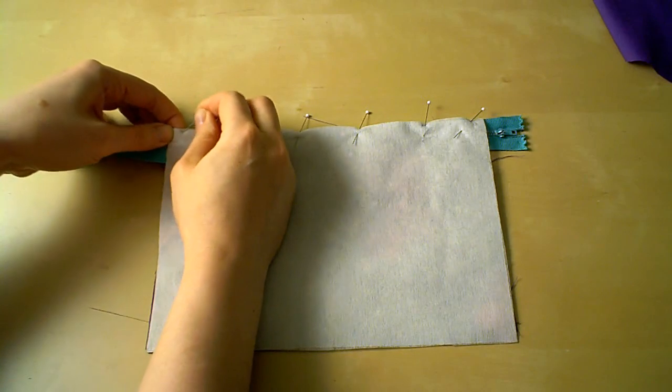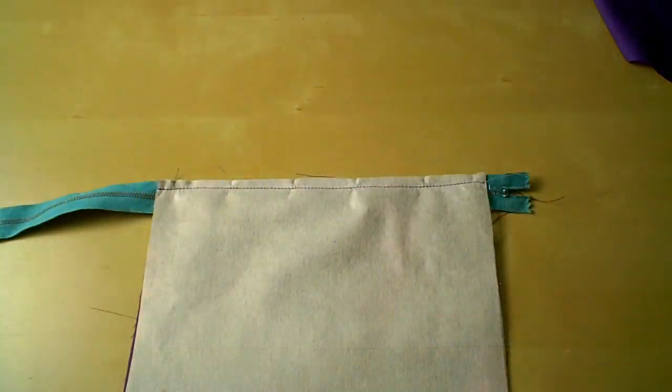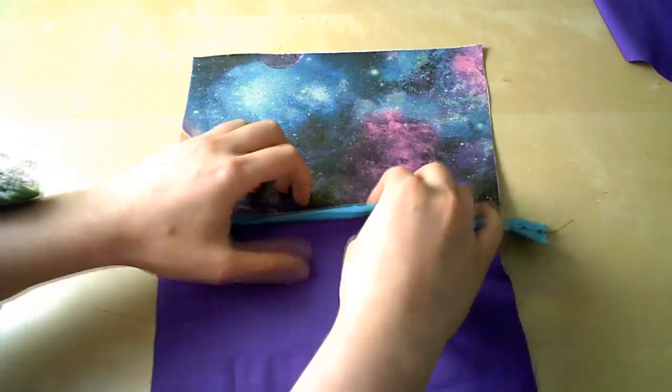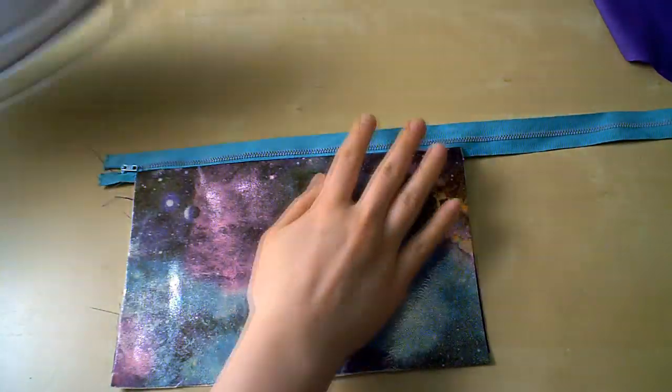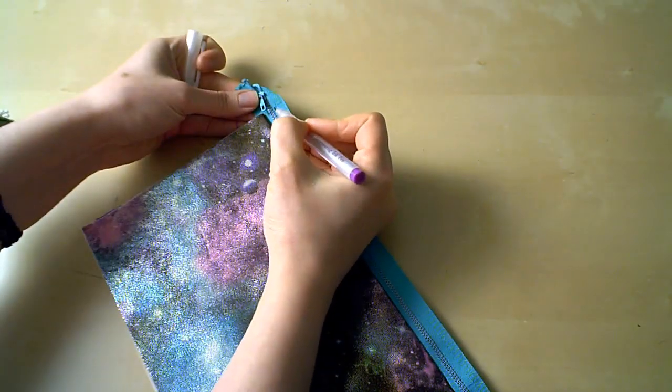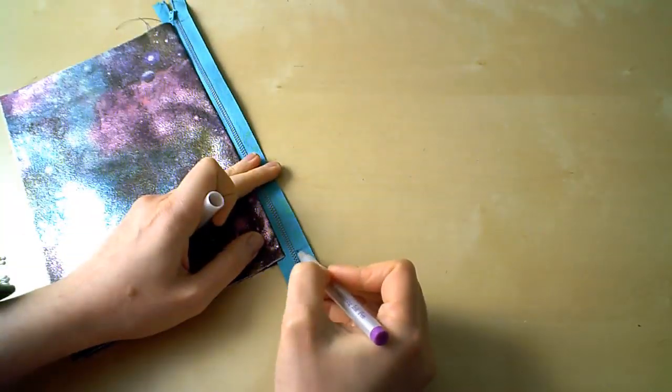Now pin through all three layers, and then we'll sew them together using a zipper foot and a straight stitch. Now we can open it up and press the fabric away from the zipper with your iron. Now I like to mark where the edges of my bag hit the zipper so I can make sure I get everything lined up right on the other side.